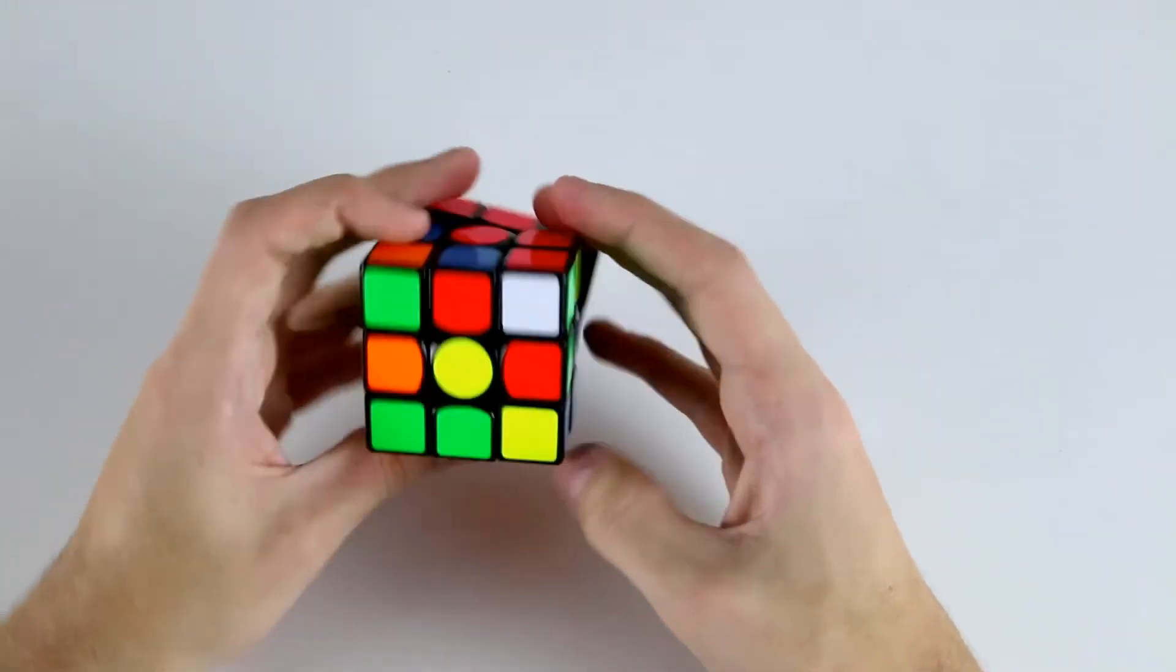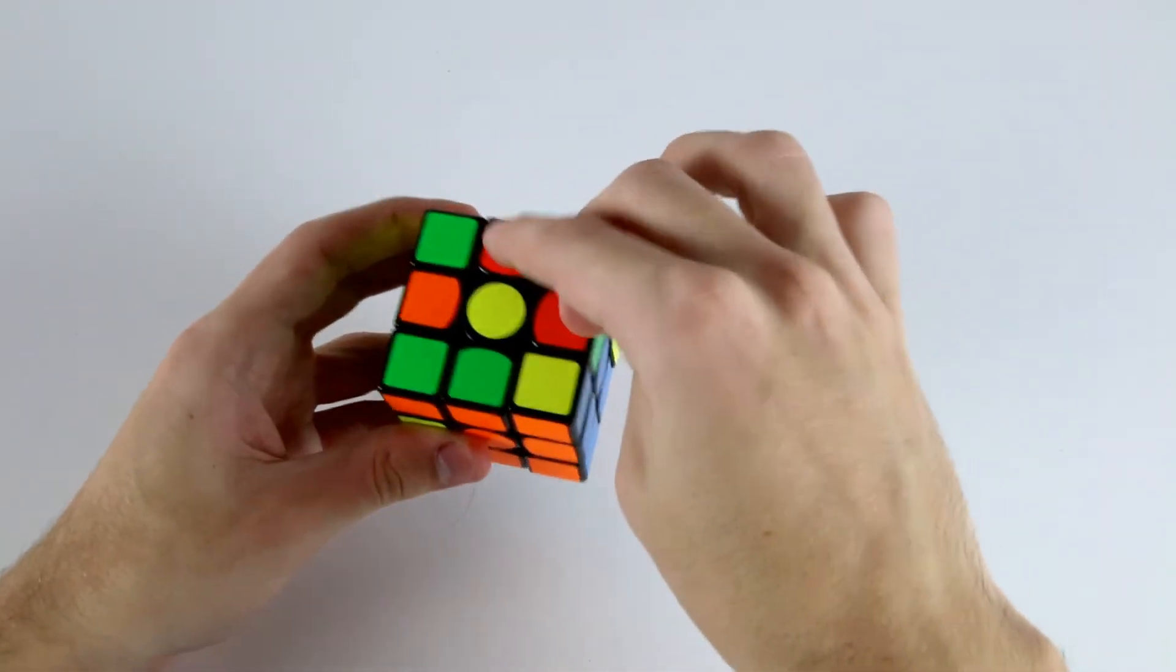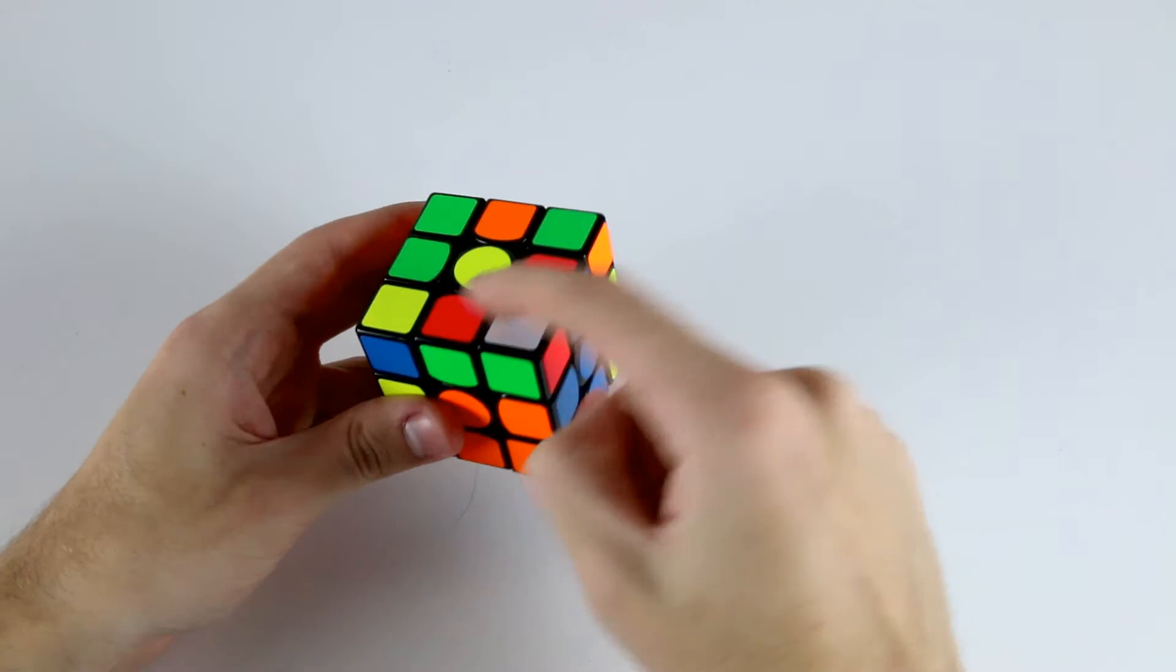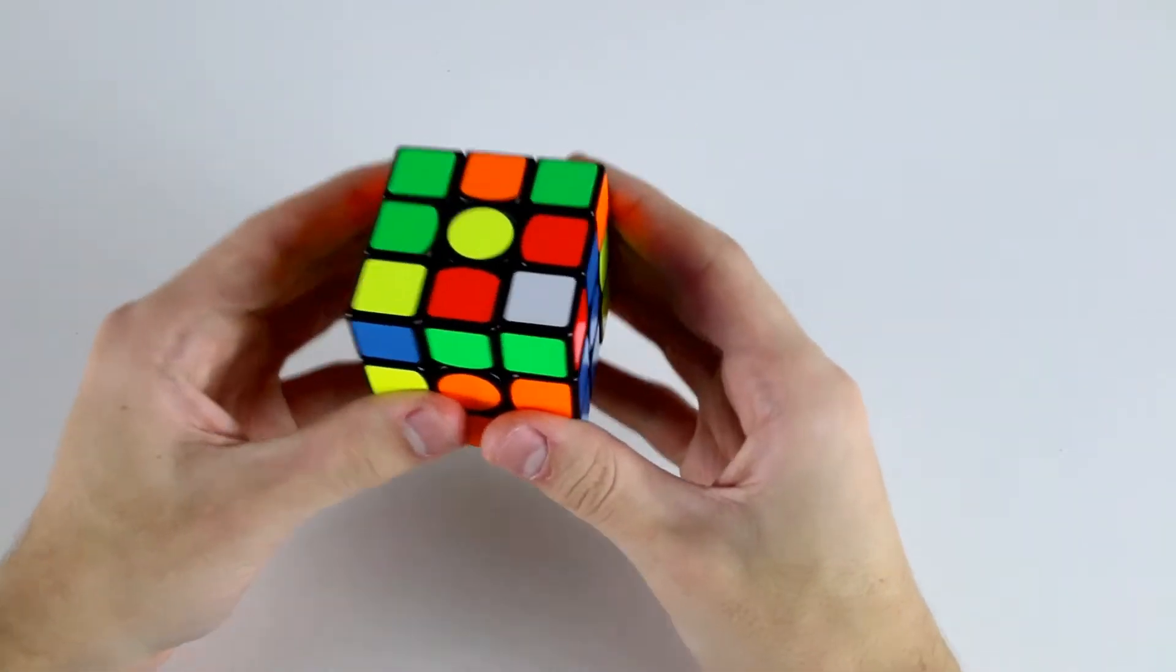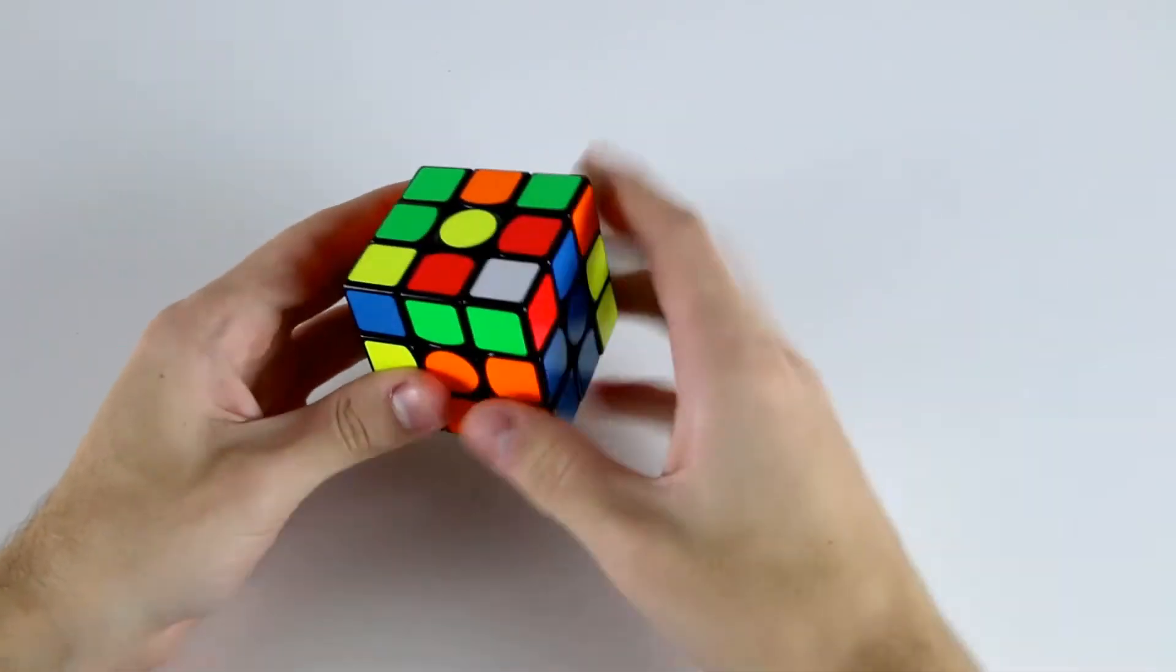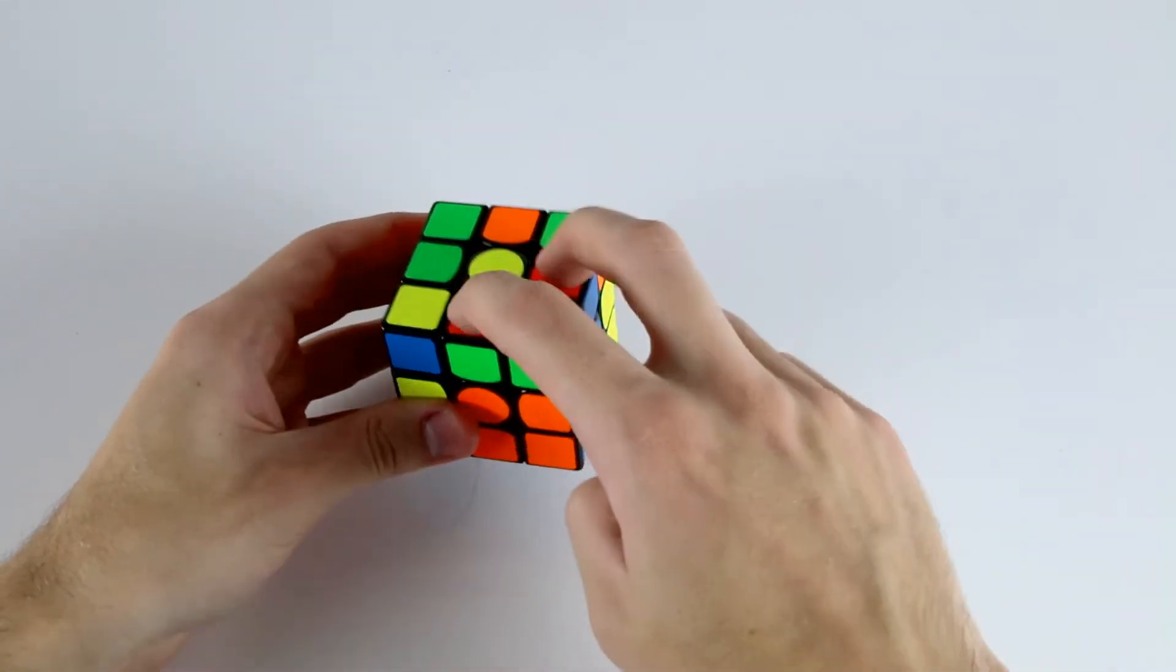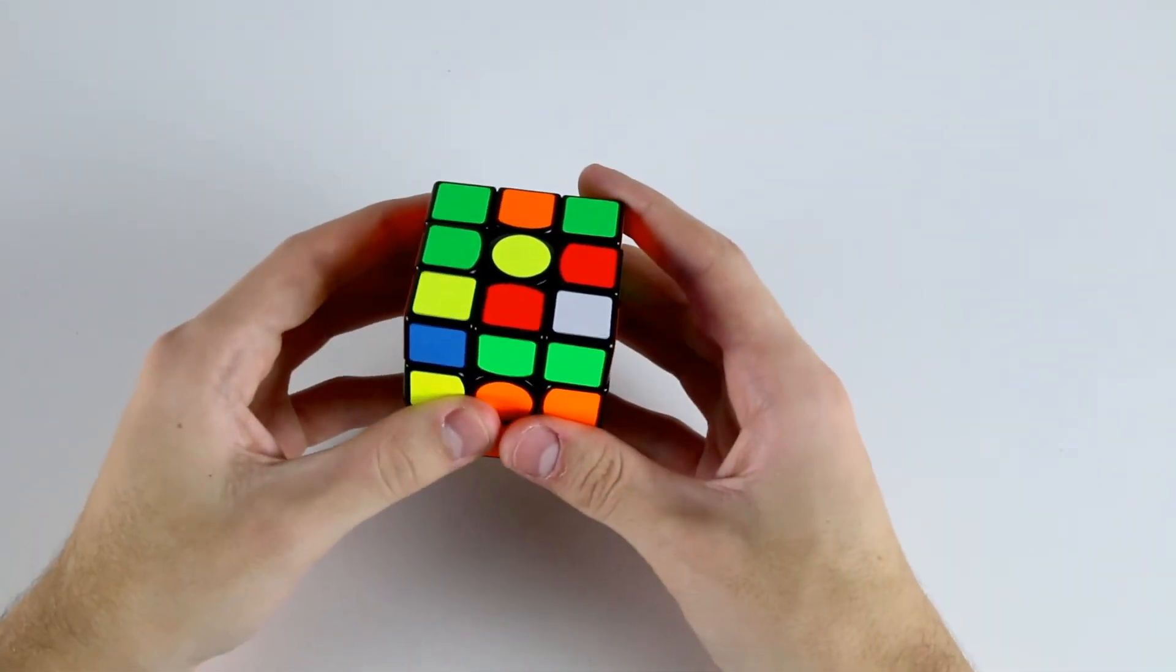However, before we do that, we can notice that there are two other F2L edges in this top layer. From this orientation, these two are actually correctly oriented because they both have the red sticker facing upwards.